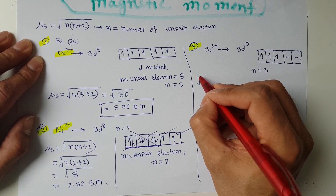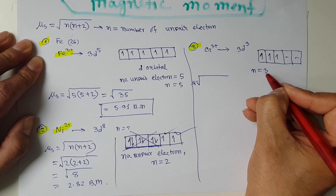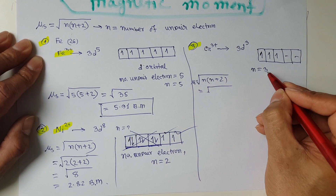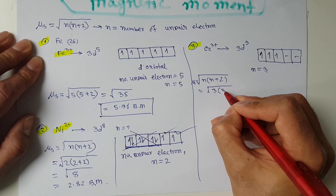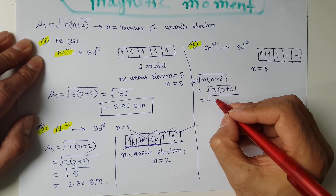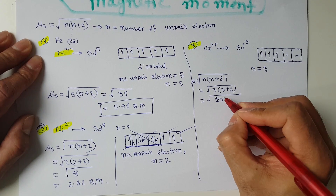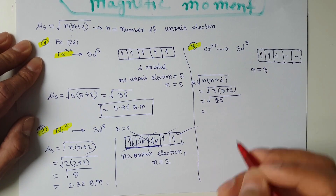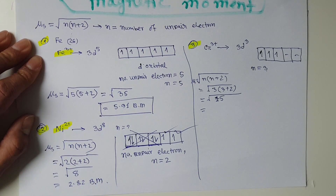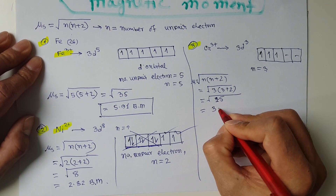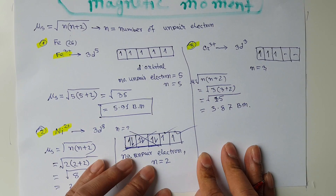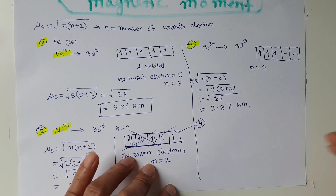For Cr³⁺ with n = 3, the spin-only magnetic moment is μs = √(n(n+2)) = √(3 × 5) = √15. Using a calculator, √15 = 3.87 Bohr magnetons. This is the answer for the third example.